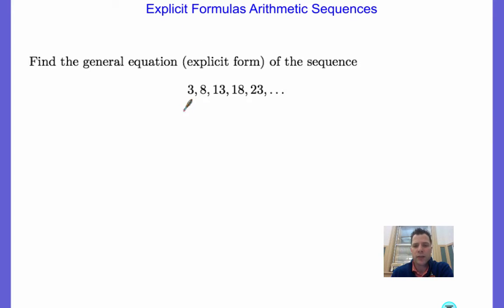If you've been watching our videos on Arithmetic Sequences, we've talked about this idea of a general equation. Now, the general equation is also called the explicit form because we can explicitly find a specific term: the fifth term, the tenth term, the twelfth term.